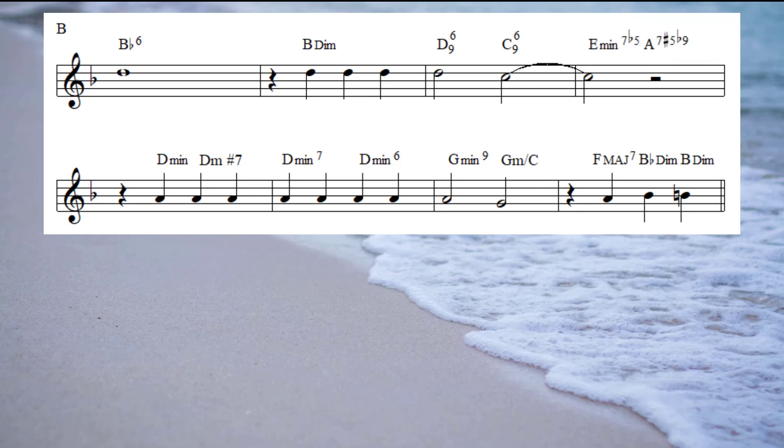So instead of being a five chord, meaning A seven moving to a D minor in bar five, I'm going to treat this as being D harmonic minor. So therefore the two five will be an E minor seven flat five going to an A seventh.